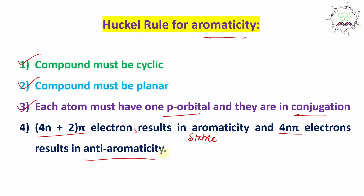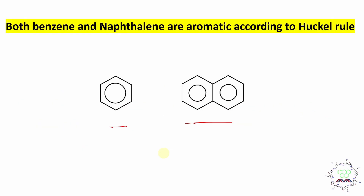This is the basic of Huckel rule. If you want to learn further, I have already uploaded a dedicated lecture on it. According to this Huckel rule, both naphthalene and benzene are aromatic. Here n value is 1 and here n value is 2 — obviously I am talking about the 4n+2 rule.